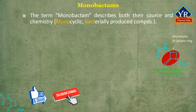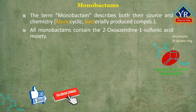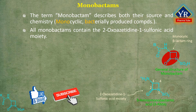Thus, the monobactams are beta-lactam antibiotics which contain only one cyclic ring, meaning they are structurally monocyclic beta-lactams that are not fused to another ring. All monobactams contain the 2-oxo-azetidine-1-sulfonic acid moiety.